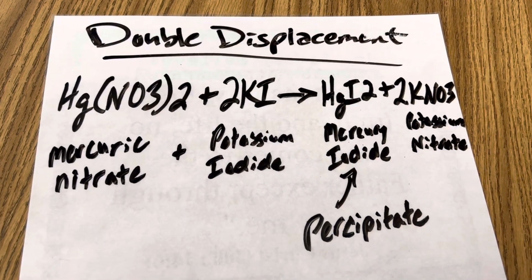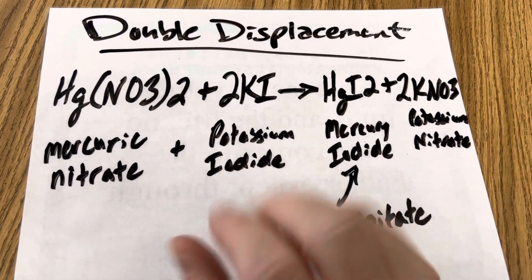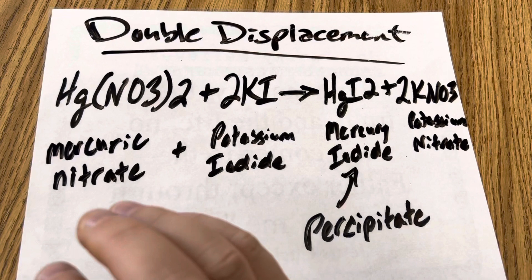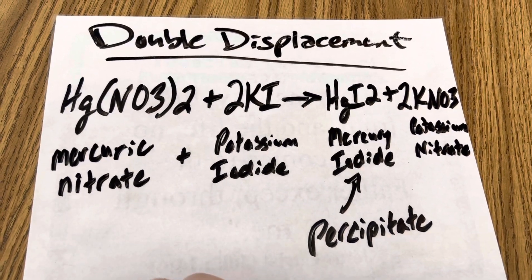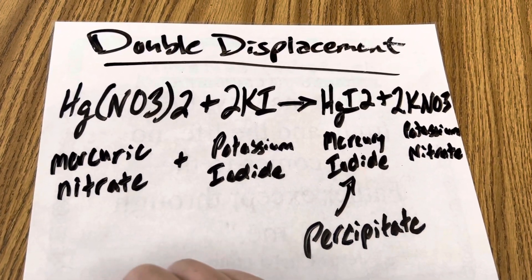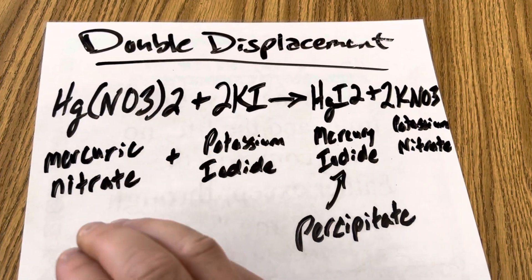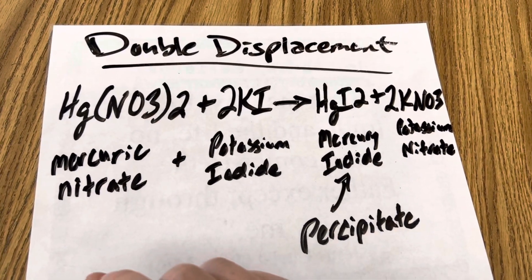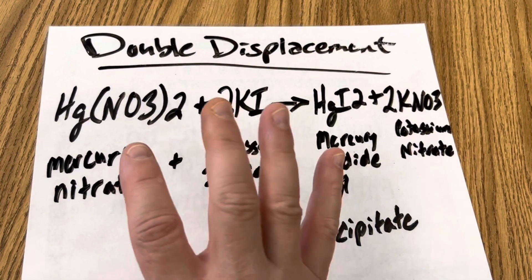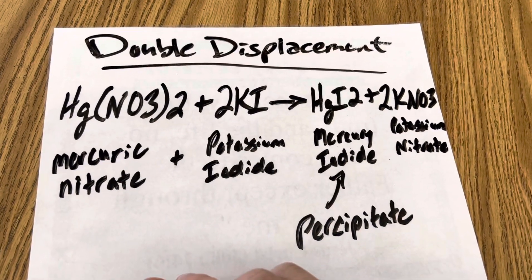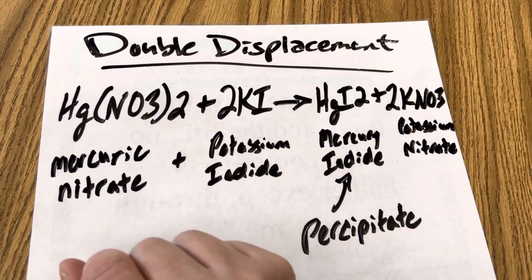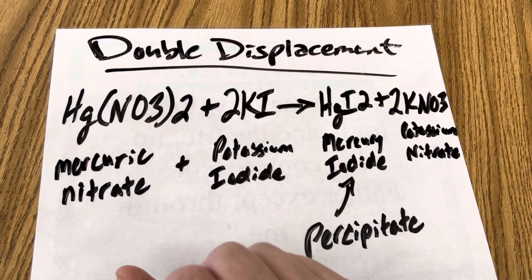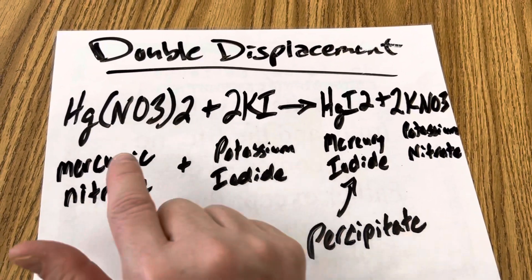Okay so what's going on in this amazing reaction is first we did a single displacement reaction where we put mercury with nitric acid and that created mercury nitrate or mercuric nitrate. Then when we added that with our potassium iodide solution that became a double displacement precipitation reaction where your mercuric nitrate traded places with your potassium iodide.